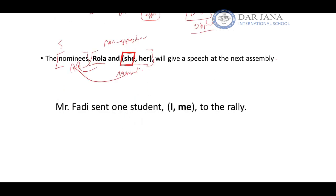Here's a final example: 'Mr. Fadi sent one student, I or me, to the rally.' Here 'I/me' is an appositive renaming 'student,' which is the direct object of 'sent.' Therefore, we must use 'me' — the objective case.